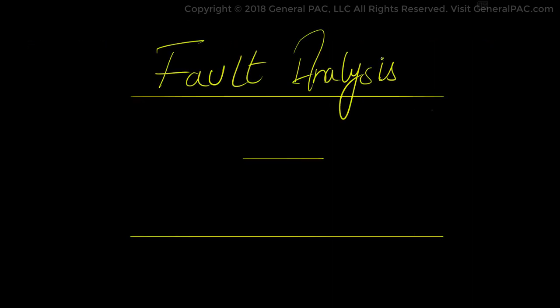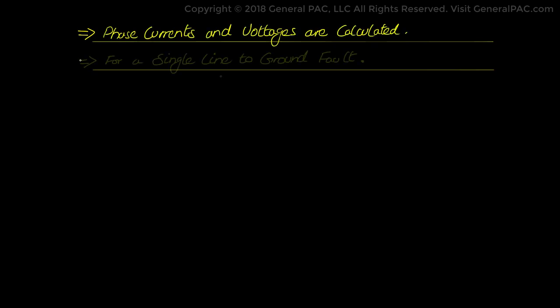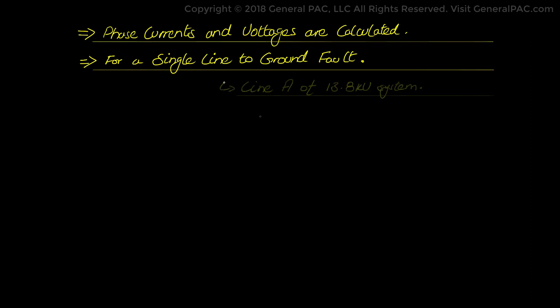Fault Analysis in Power Systems Part 3b. This is the second video in Part 3 of the series in Fault Analysis in Power Systems where we will hand calculate the current and voltage quantities for various types of fault. In this video we will see how phase current and voltages are calculated for a single line to ground fault on line A of the 13.8 kV system.